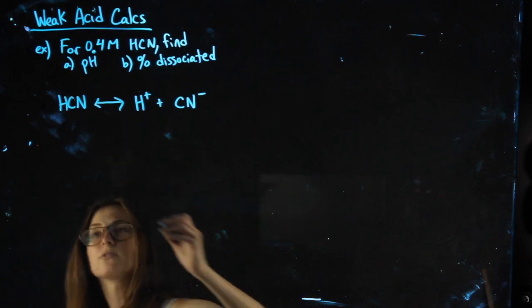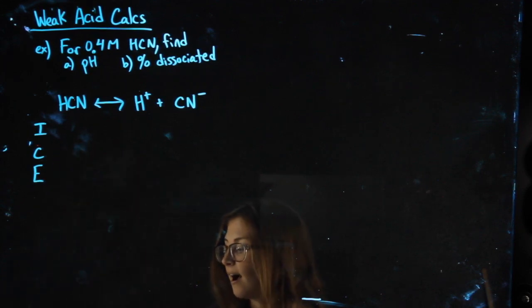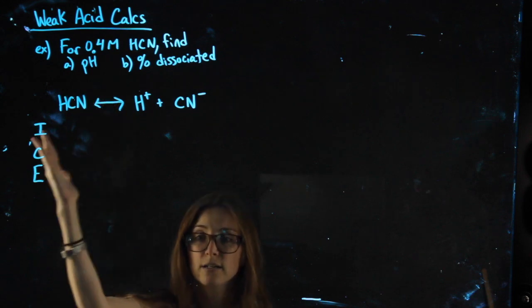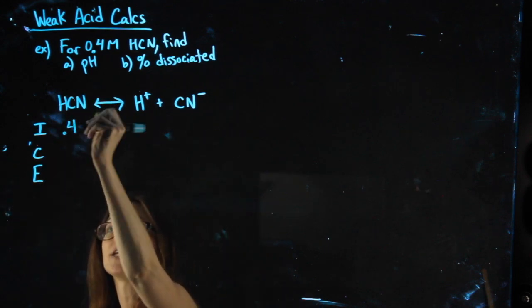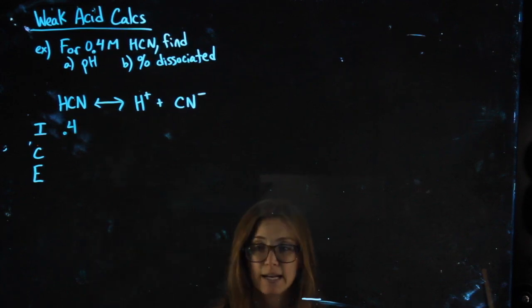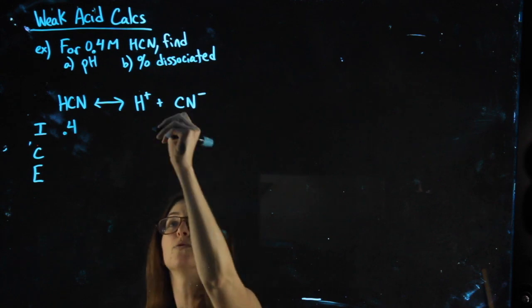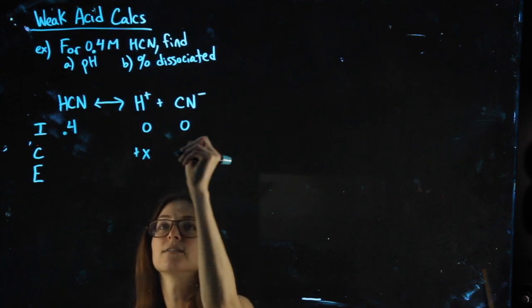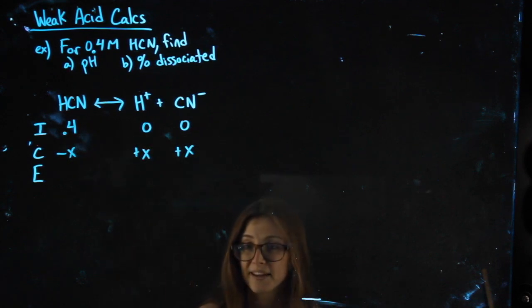Equilibrium arrows tell me I can use an ICE chart. It tells me I have 0.4 molar HCN. My ICE chart's going to be in molarity, so 0.4 molar HCN. It doesn't tell me anything else, so my initial values, when they're not mentioned, will be 0. This side with 0 gets a plus. This side without 0 gets minus.